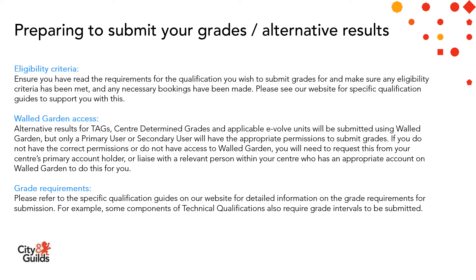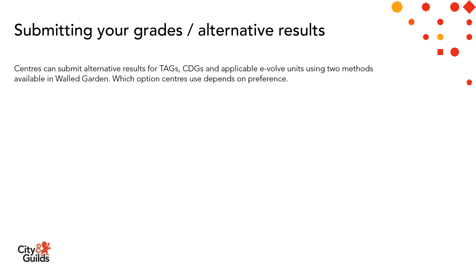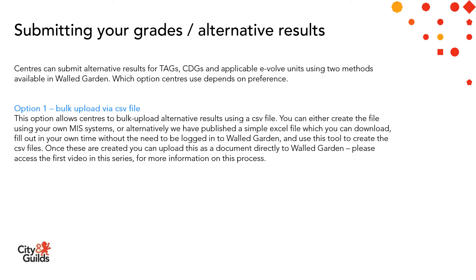For example, some components of technical qualifications also require grade intervals to be submitted. Centres can submit alternative results for TAGs, CDGs and applicable Evolve units using two methods, both available in walled garden, and whichever option centres use depends on their preference. The first option is a bulk upload via CSV file, which allows centres to bulk upload alternative results using a CSV file created either using your own MIS systems, or alternatively using a simple Excel file we've published which you can download, fill out in your own time without needing to be logged into walled garden, and use to create the CSV files. Once created, you can upload this document directly to walled garden — please access the first video in this series for more information on this process.